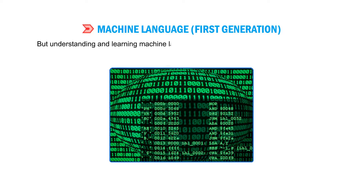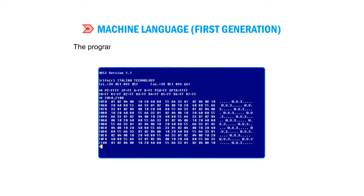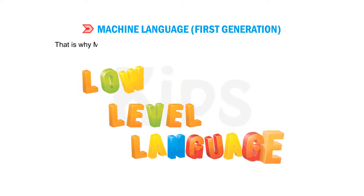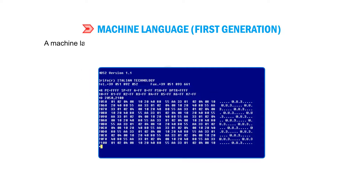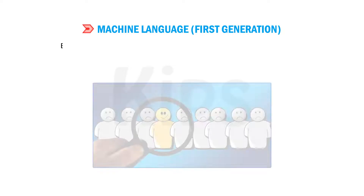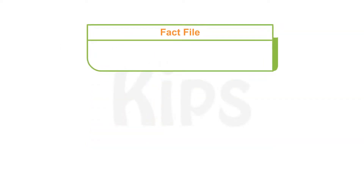However, understanding and learning machine language is a tough and time-consuming process. It is very difficult to write and debug programs written in machine language. The programs written in machine language are machine dependent, which is why machine language is also regarded as low-level language (LLL). A machine language program written on one computer may or may not run on another computer. Because of this, very few people opt for specialization in machine language.